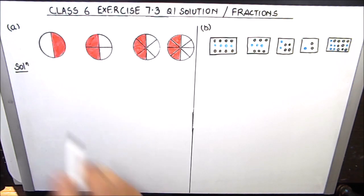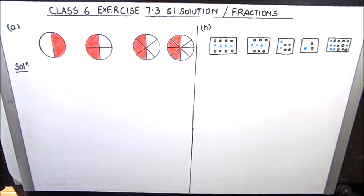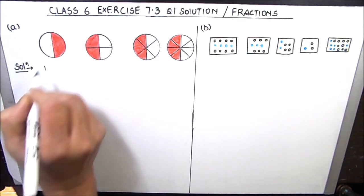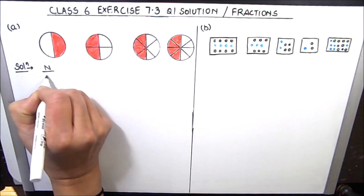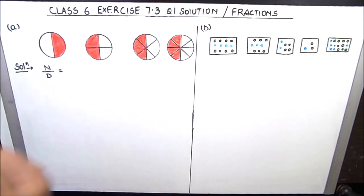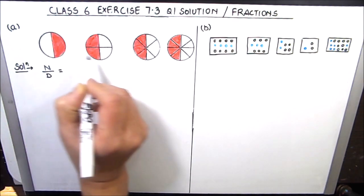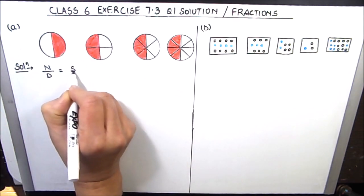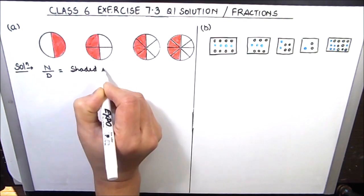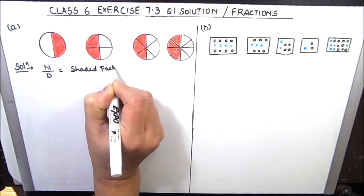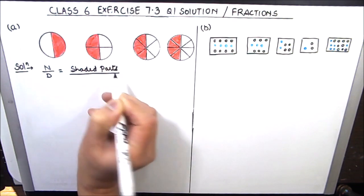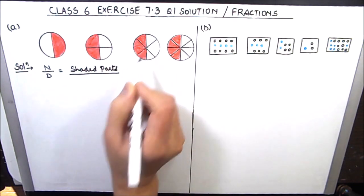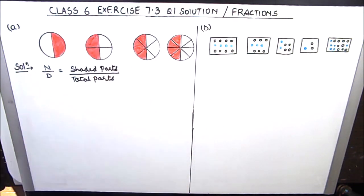In part A we have been given four circles and we have to first write the fractions for these pictures. After writing the fractions we have to tell whether these fractions are equivalent or not. We will write fractions as numerator divided by denominator — in the numerator we write the number of shaded parts, and in the denominator we write the total number of parts of the picture.